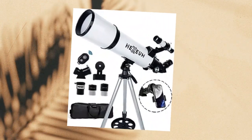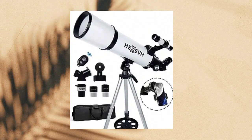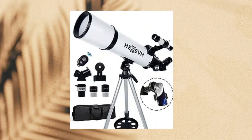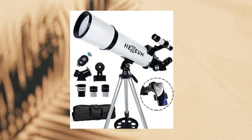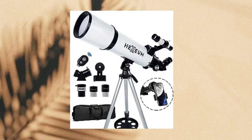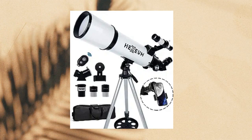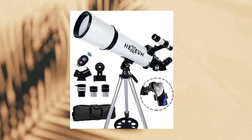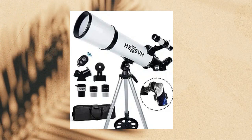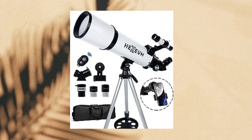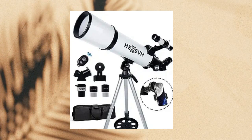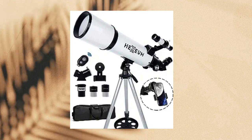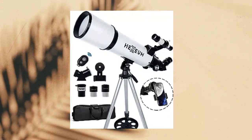TANET Telescope 80mm Aperture, 600mm. Explore the cosmos with our exceptional telescope. Boasting a 600mm focal length, 80mm aperture, and multi-coated optics, it delivers brilliant image clarity. Equipped with 25mm and 10mm eyepieces for 24x and 60x magnification, plus a 3x Barlow lens that triples magnification. Easily locate celestial objects with the 5x24 finder scope.